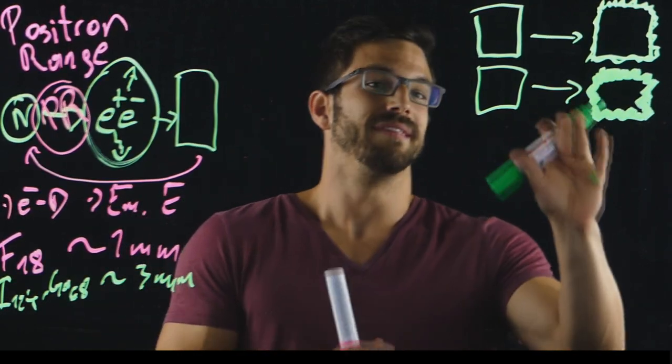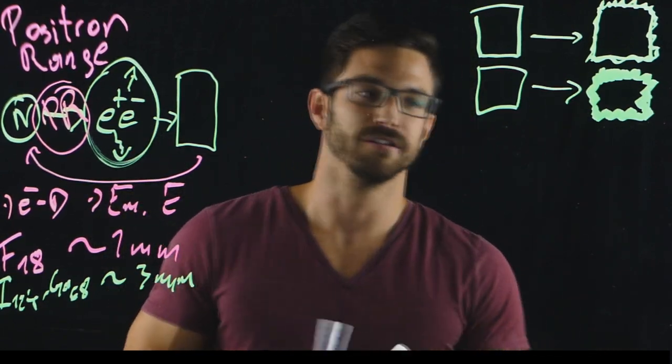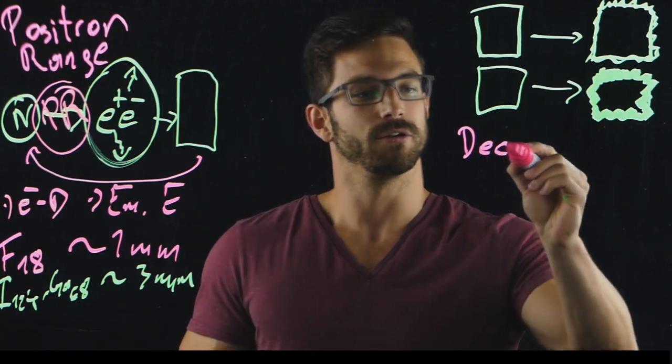Nevertheless, physicists deal with this problem. We realize that the positron range needs to be corrected. That's the normal approach. What we do is a so-called deconvolution.